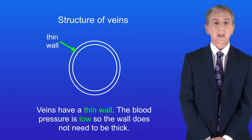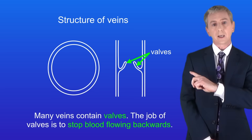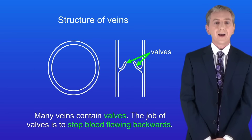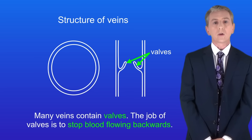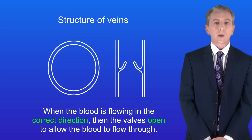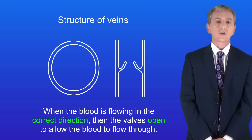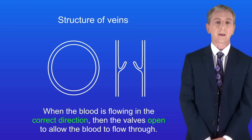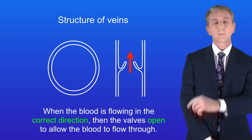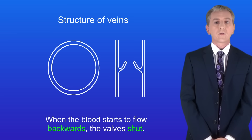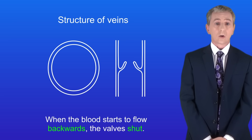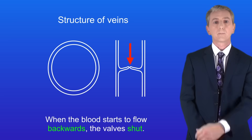Secondly, many veins contain valves, and we can see these here. The job of valves is to stop blood flowing backwards. When the blood's flowing in the correct direction the valves open to allow the blood to flow through. However, when the blood starts to flow backwards the valves shut, and we can see that here.